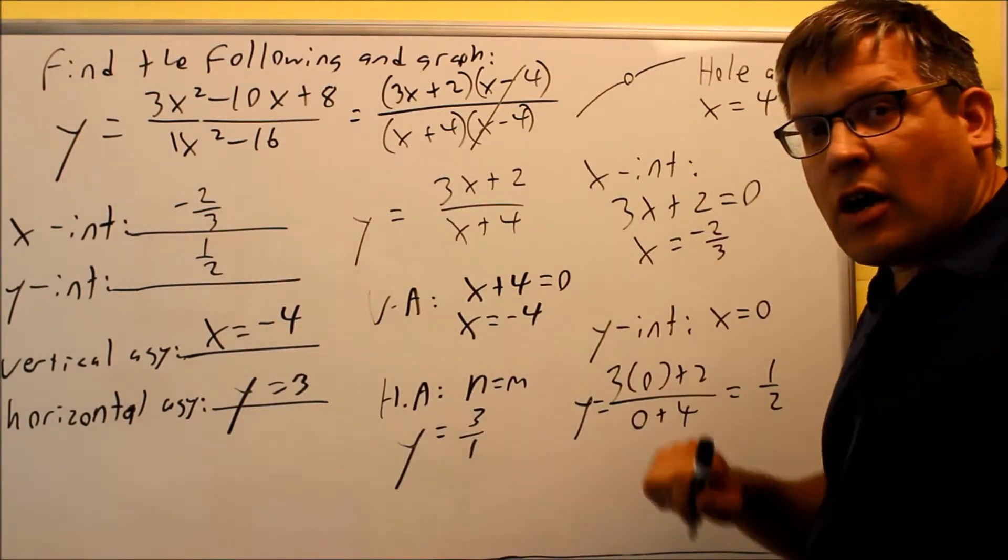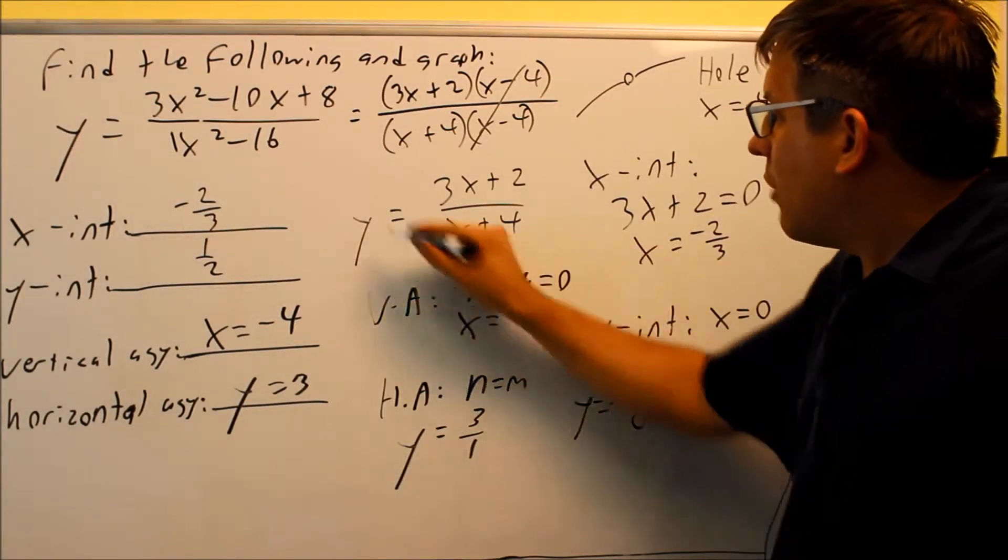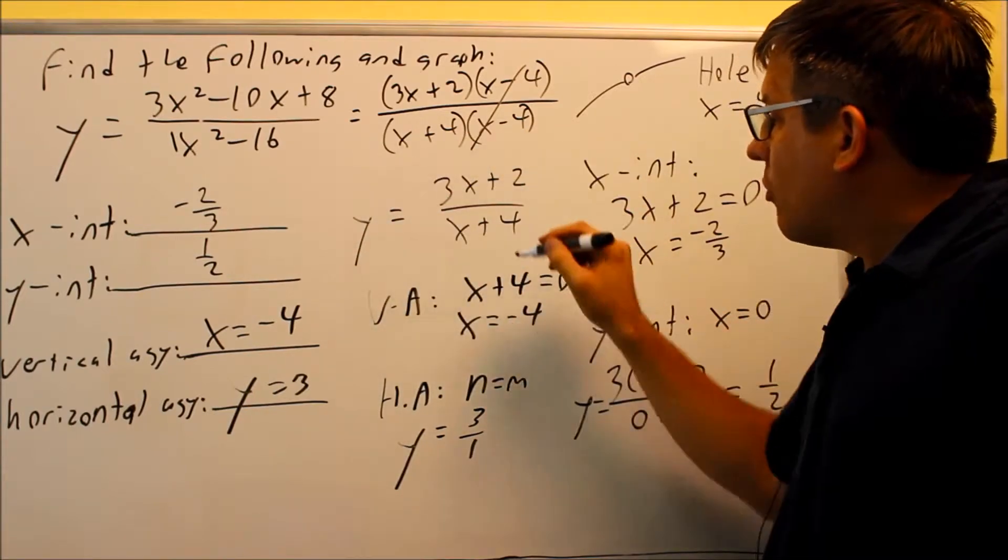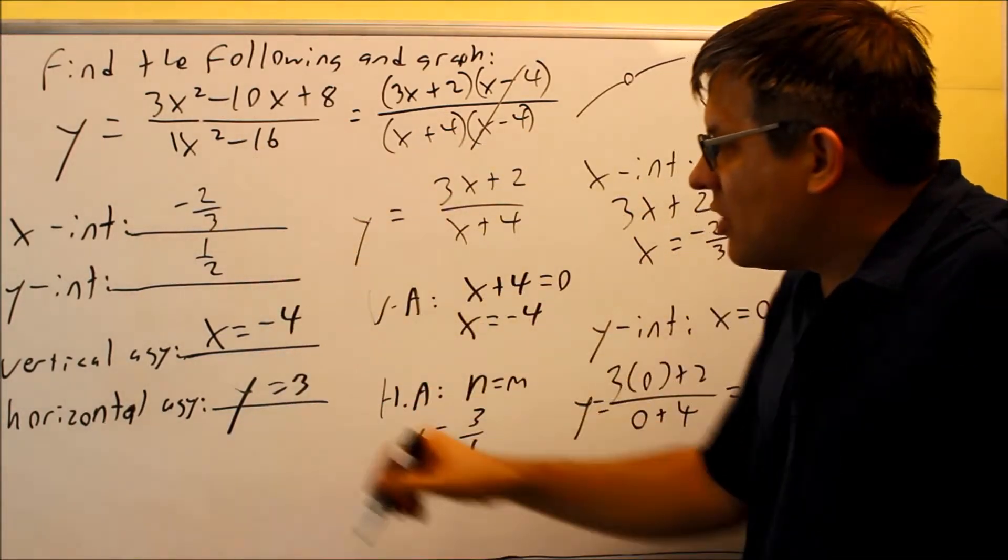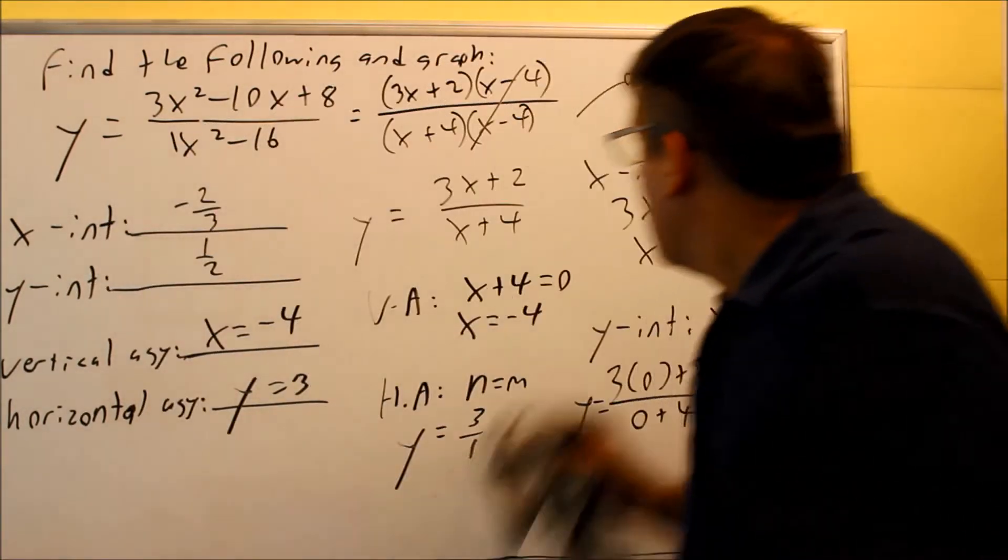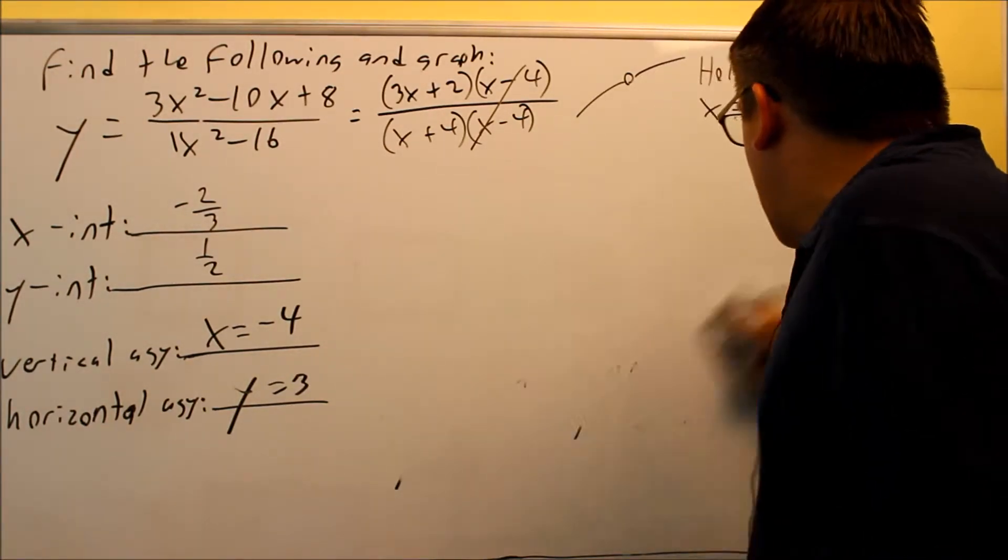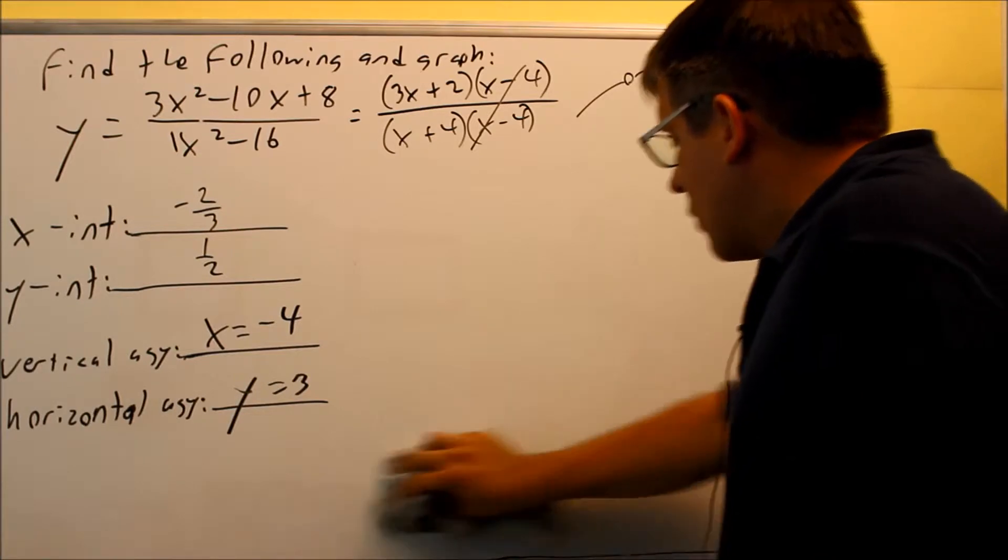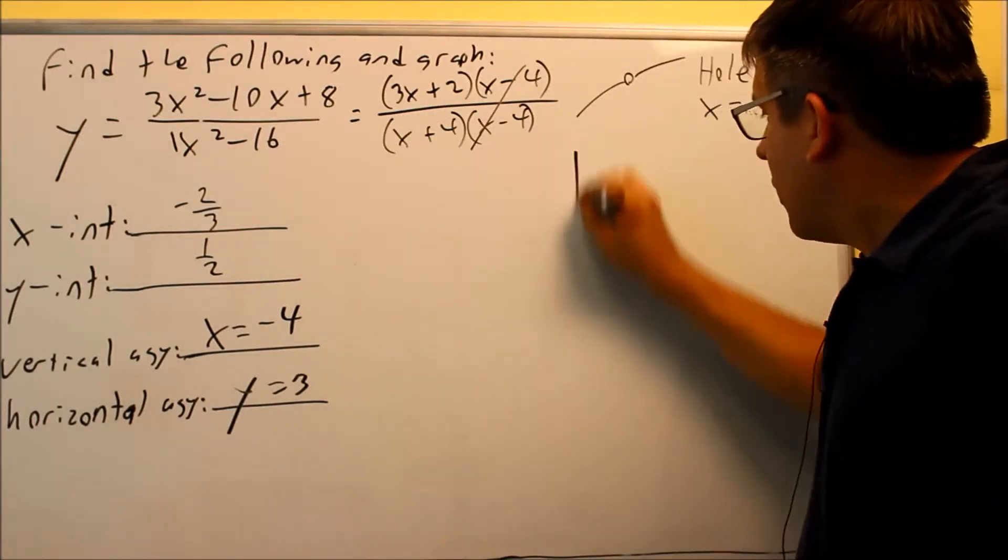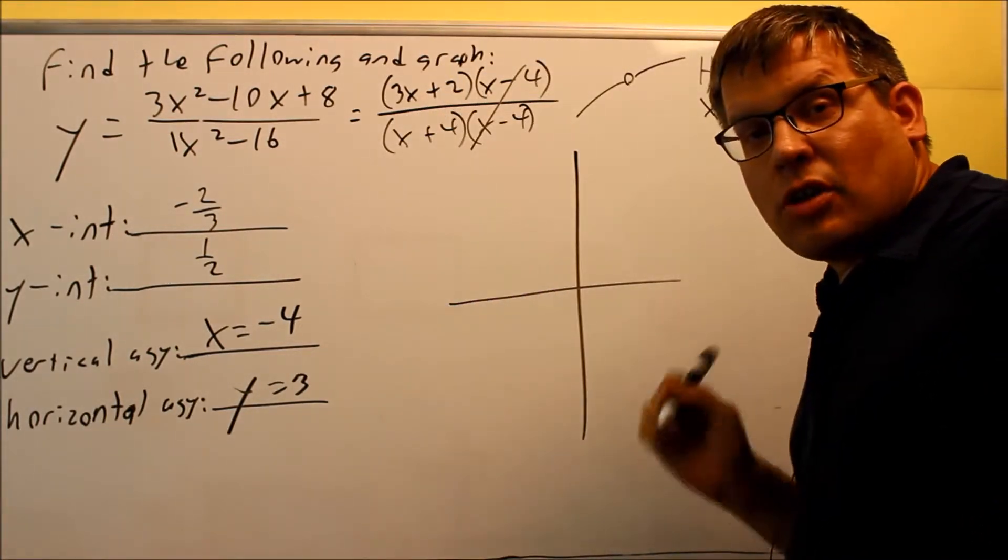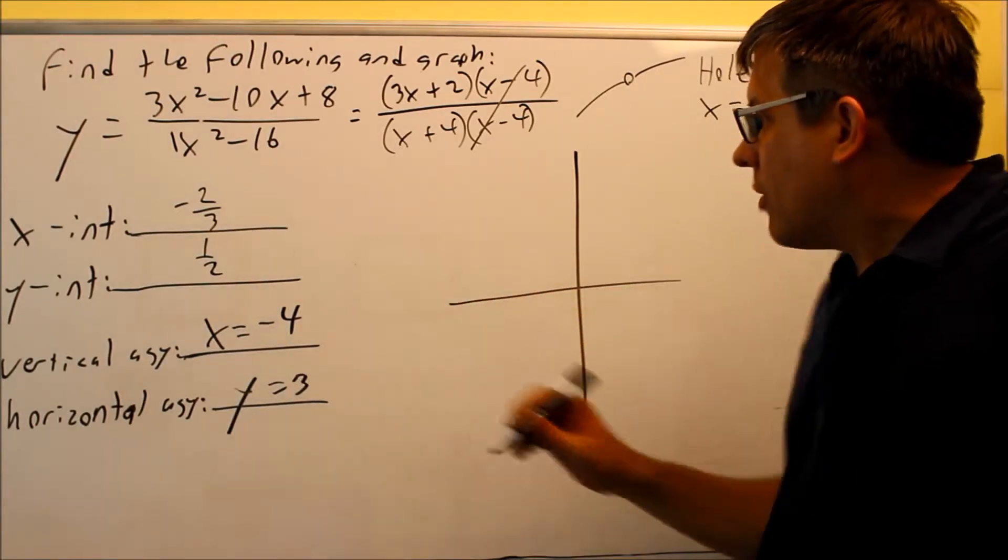So again, this is basically the graph I'm going to be looking at. That's the information that we found. So now we'll put all this together onto a graph. So first we want to set it up with our correct intercepts and our asymptotes.